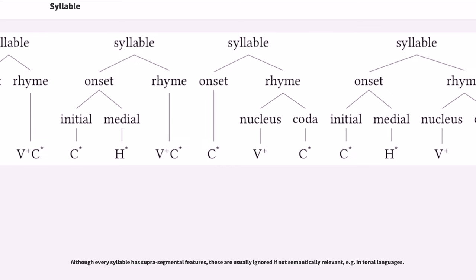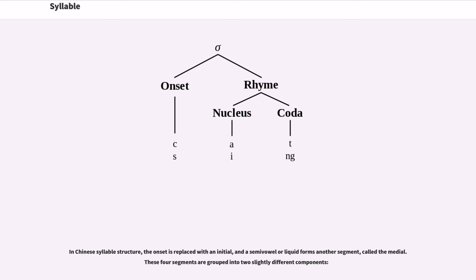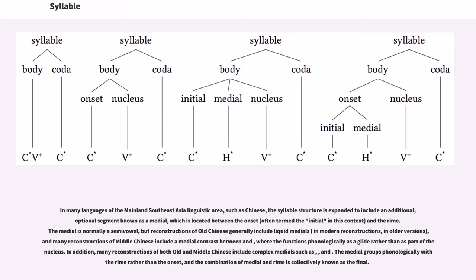Although every syllable has suprasegmental features, these are usually ignored if not semantically relevant, for example in tonal languages. In Chinese syllable structure, the onset is replaced with an initial, and a semi-vowel or liquid forms another segment, called the medial. These four segments are grouped into two slightly different components. In many languages of the mainland Southeast Asia linguistic area, such as Chinese, the syllable structure is expanded to include an additional, optional segment known as a medial, which is located between the onset and the rhyme.